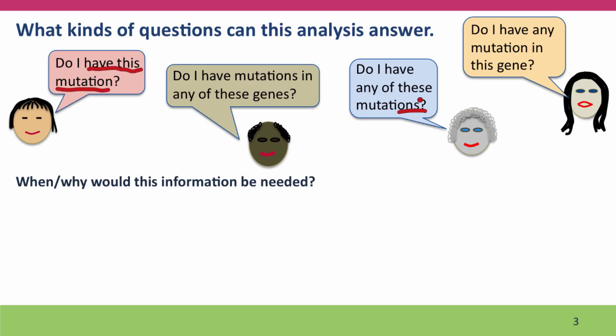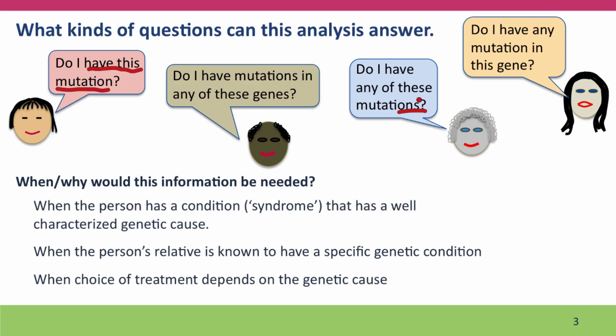Why would you want to answer these questions? They're done typically for one of three reasons. A person may have a medical condition or syndrome with a well-known genetic cause, and the test would confirm whether a particular mutation is present. Another reason is the person may have a relative with a genetic condition and wants to know if they've inherited the gene that causes or increases risk of that condition. In some cases, the choice of treatment depends on the genetic cause, and sequencing the whole gene may be needed to find the actual defect.